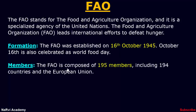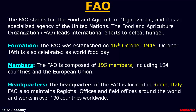The FAO is composed of 195 members including 194 countries and the European Union. The headquarters of the Food and Agriculture Organization is located in Rome, Italy. FAO also maintains regional offices and field offices around the world and works in over 130 countries worldwide.